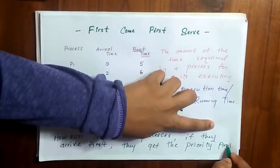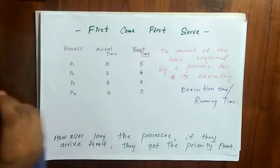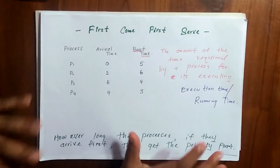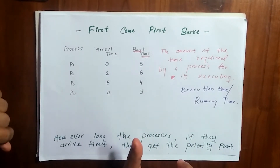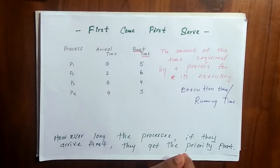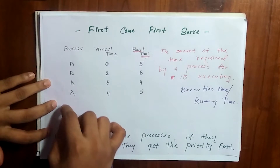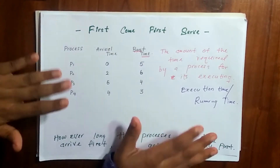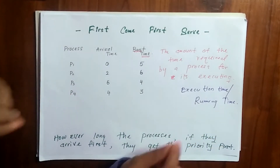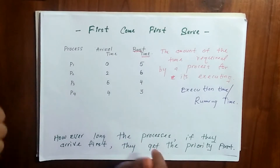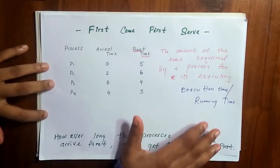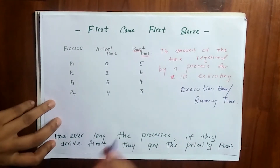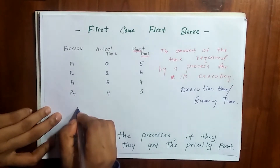In all these scheduling policies we have to do five things. First, we have to draw the Gantt chart. Then we have to find the waiting time, average waiting time, turnaround time, and finally average turnaround time. So we start with the Gantt chart.